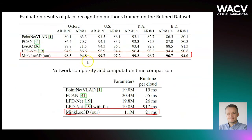Quantitative results are shown in this table. Our method outperforms other learning-based methods by a large margin. It improves over the current state-of-the-art LPDNet, despite having a simpler architecture and being more computationally effective. The bottom table compares complexity and computational efficiency of our method with previous art. MingLoc3D has almost 20 times fewer learned parameters and is computationally very efficient.